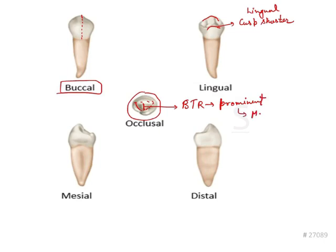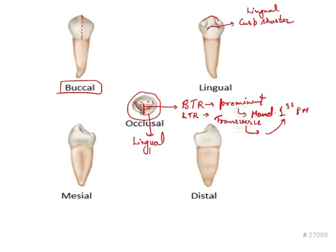So we get the hint that this is the mandibular first premolar. The buccal triangular ridge and the lingual triangular ridge together form the transverse ridge, and the most prominent transverse ridge is seen in the mandibular first premolar — that is one important thing to remember. Additionally, the lingual cusp is rudimentary or non-functional, which further confirms the tooth is the mandibular first premolar.